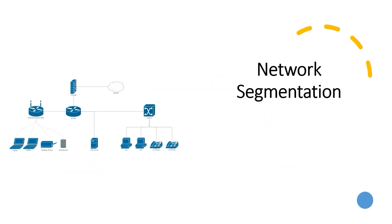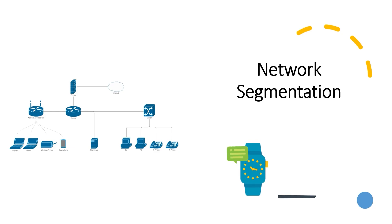Network segmentation, also referred to as segmentation or isolation, is the process of isolating system components that store, process, or transmit cardholder data from systems that do not. When performed appropriately, network segmentation may reduce the scope of the Cardholder Data Environment, or CDE, and thus reduce the scope of the PCI DSS assessment — saving you time, effort, and money.